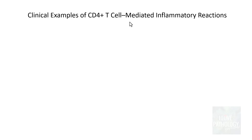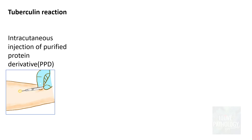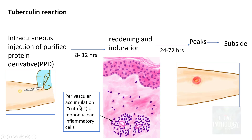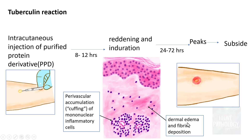The two most common clinical examples of CD4 positive T cell mediated inflammatory reactions are the tuberculin reaction and contact dermatitis. In the tuberculin reaction, after intracutaneous injection of purified protein derivative, within 8 to 12 hours there is reddening and induration at the injected site, peaking at around 24 to 72 hours. Histopathological features include perivascular accumulation of mononuclear inflammatory cells — lymphocytes and macrophages — called perivascular cuffing, along with variable dermal edema and fibrin deposition.